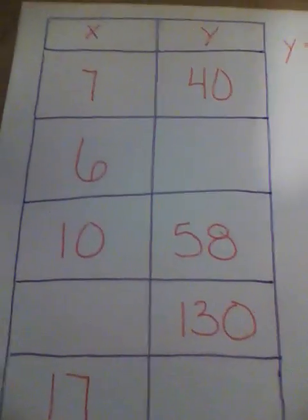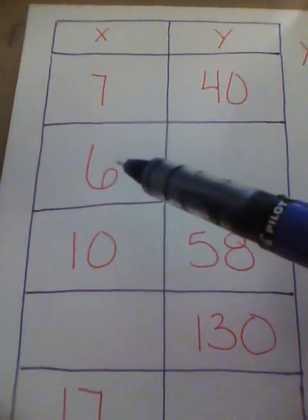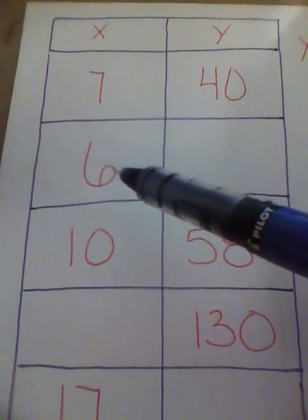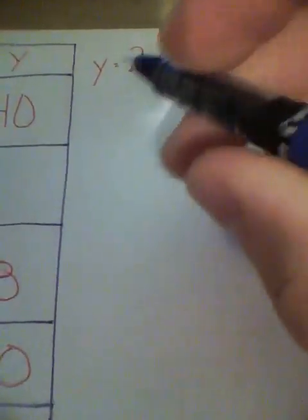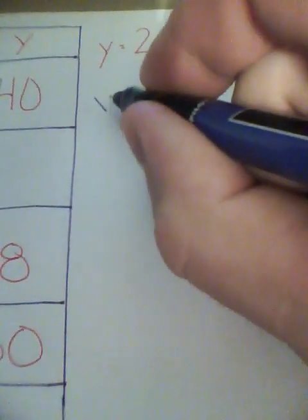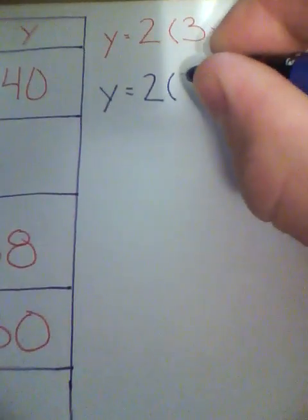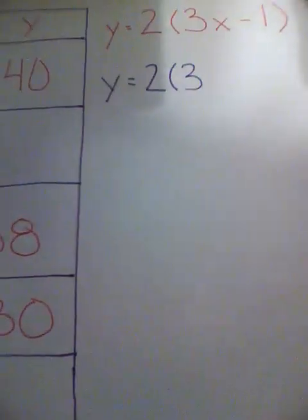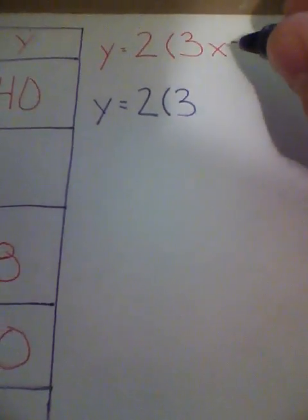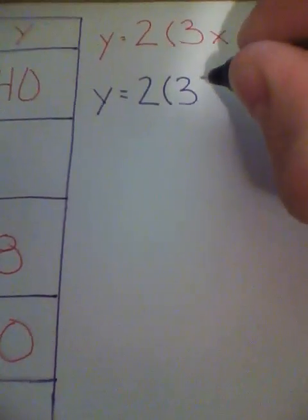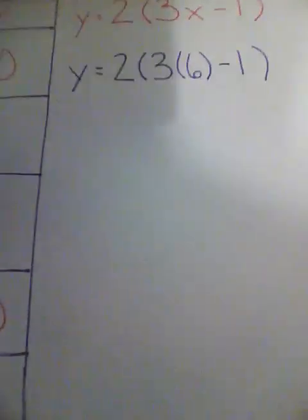So first problem I'm going to look at is this one here where the Y is unknown. I see that X is equal to 6. So what I'm going to do is substitute the 6 in for wherever I see an X in my function. I don't know what Y is, that's what I'm solving for. So I say Y is equal to 2 times 3, there's 3X which means 3 times X. Now I know that X is equal to 6, so it becomes 3 times 6 minus 1.